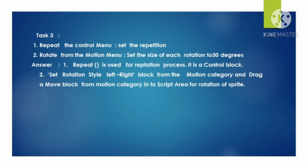The next slide contains the next part of questions and answers. Task 3. Number 1: Repeat the control menu and set the repetition. Number 2: Rotate from the motion menu and set the size of each rotation to 30 degrees. Number 3. Answer number 1: Repeat block is used for repetition process — it is a control block. Number 2: Set rotation style left-right block from the motion category and drag a move block from the motion category into the script area for rotation of the sprite.